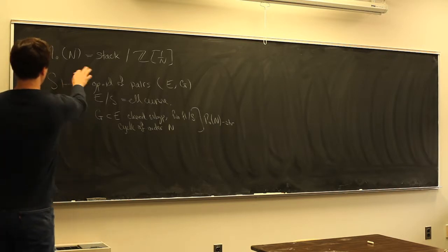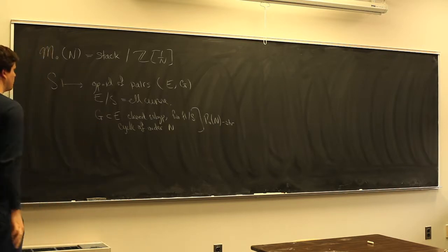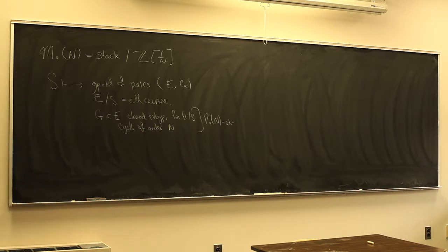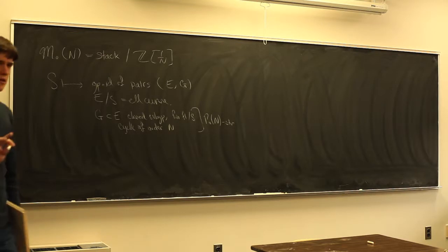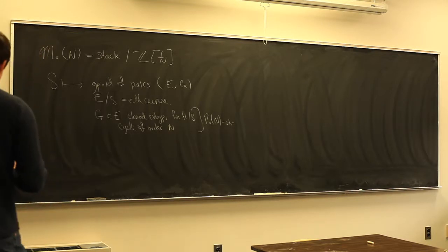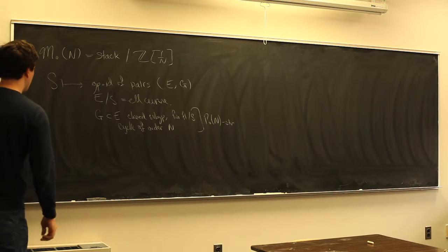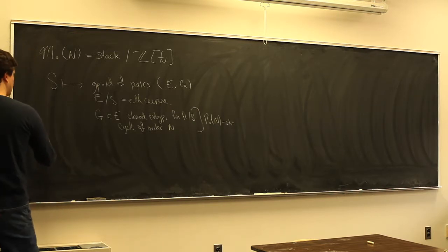So this is the functor of points: it sends a scheme S to this groupoid. Last time I called that Y₀(n), but I'm going to change notations and use this for the stack from now on, and Y₀(n) for the coarse space, which I'm about to introduce. Last time we showed that this was a Deligne-Mumford stack.